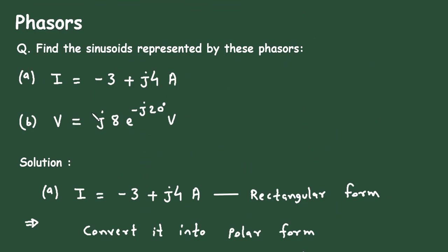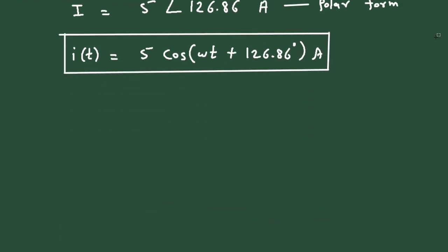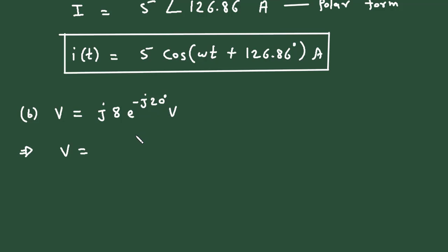Next, this phasor is given in exponential form. Here v equals j multiplied by 8 e to the power minus j20 degrees. We know that j equals 1 at an angle 90 degrees, and 8 e to the power minus j20 is a separate term.